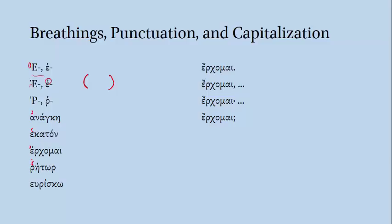If a word already has an accent over a vowel, we put our breathing mark right before the accent — it always comes before. For example, the word 'ercomai,' which means 'I'm coming,' doesn't start with an H sound, so we put a smooth breathing on it, placed before the accent over the Epsilon. The last word here means 'I find' and it's pronounced 'heurisko,' and we put our rough breathing mark over the Epsilon, the second vowel in the diphthong.